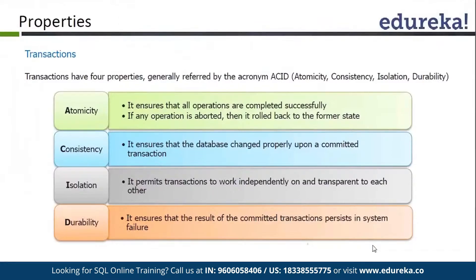Here we call it ACID — the ACID principle that is used in transactions. ACID: A means Atomicity. It simply means all the operations are completed successfully, or no operation is completed. If there is any issue with any of the transaction actions, we just roll back everything, and we maintain our atomicity.